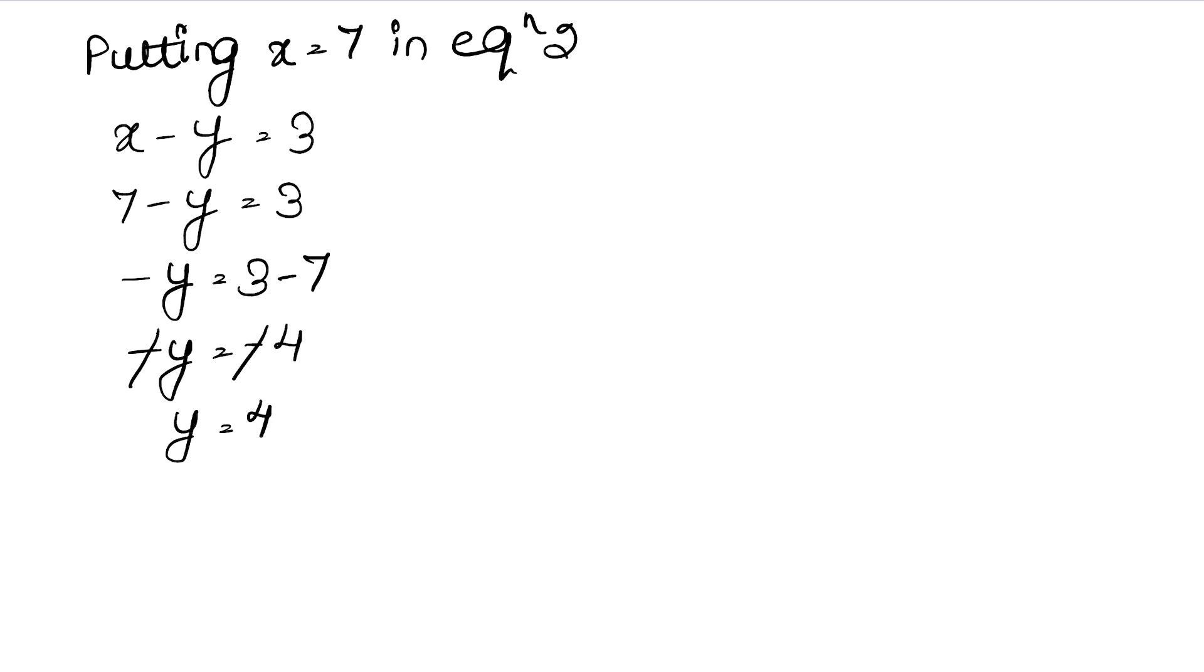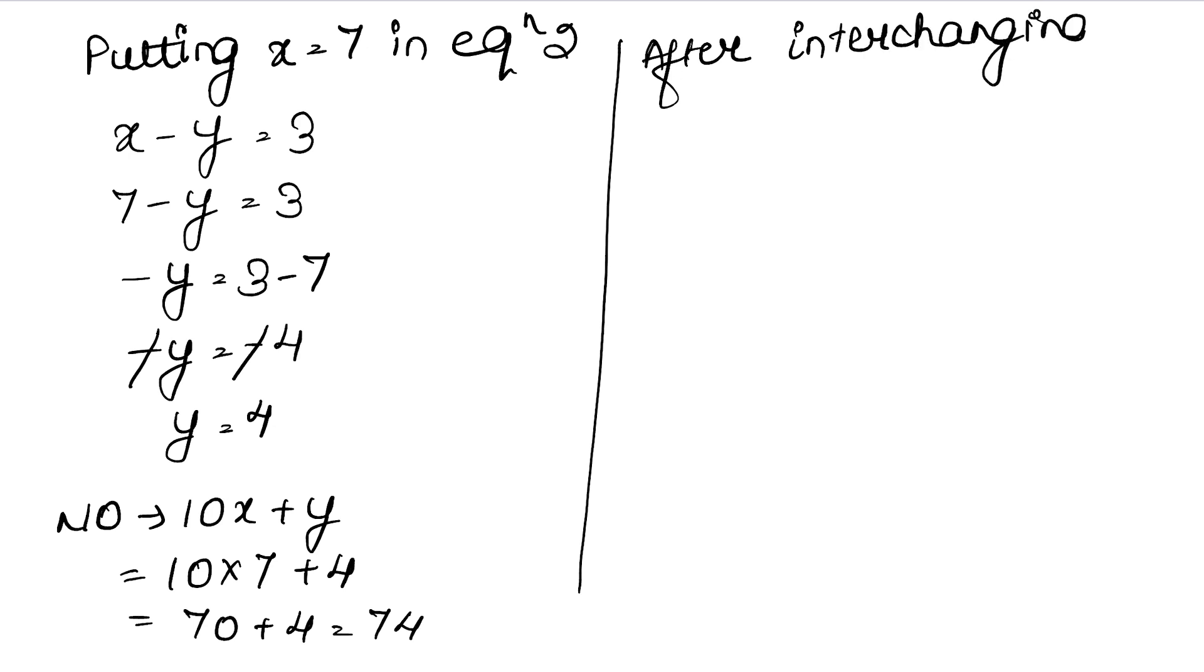The number is how much? Number is 10x plus y. So our number is 10 into x, x is 7 plus 4. So this is 70 plus 4, that is 74. After interchanging or reversing, the number is 10y plus x. 10 into y is 10 into 4 plus x is 7. So this is 40 plus 7, which is 47.